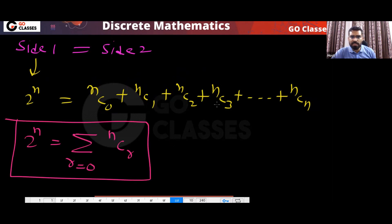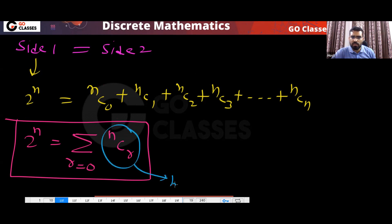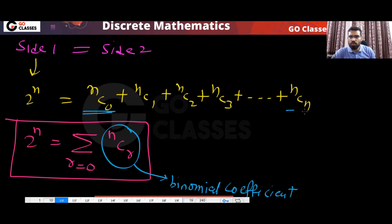So side one and side two are the two sides of the same story. Therefore 2^n equals the summation of NCR where r goes from 0 to n. The summation of binomial coefficients equals 2 power n — this is very important. NCR is called a binomial coefficient, and the summation of binomial coefficients from NC0 to NCn equals 2 power n.